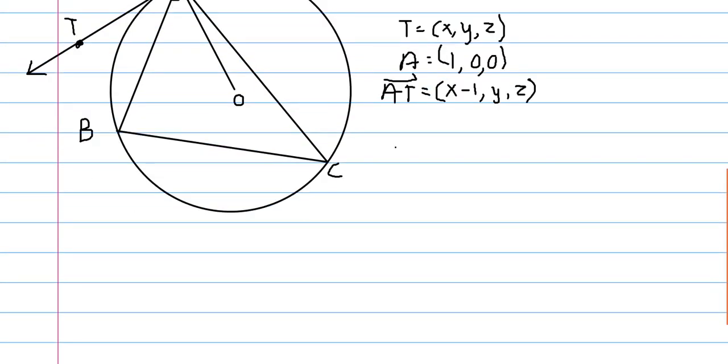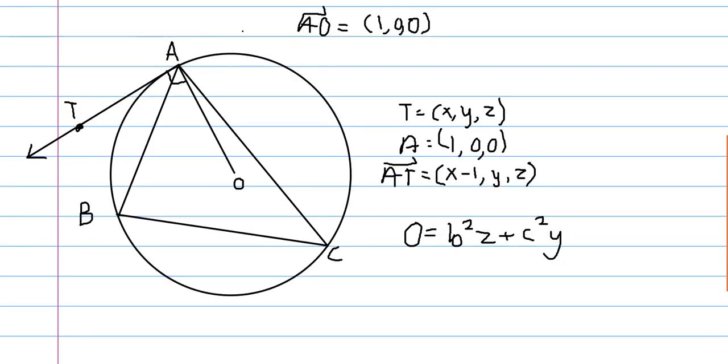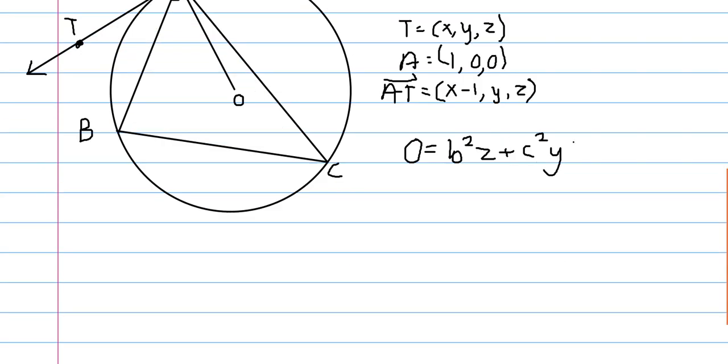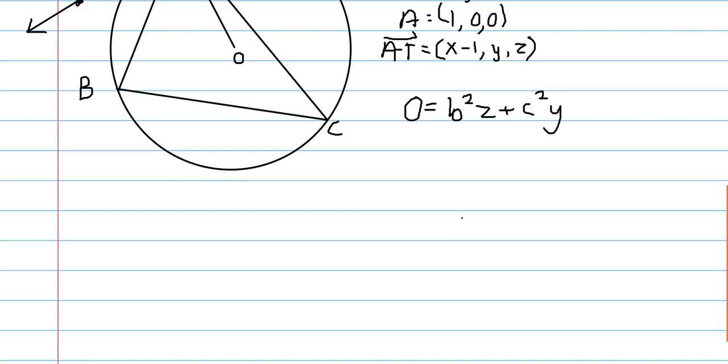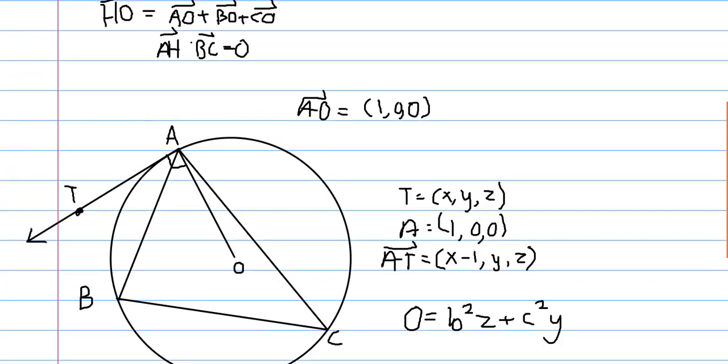And if you were to plug in these coordinates, then we get that zero is equal to b squared z plus c squared y. This is the parametrized tangent to the circumcircle at A, in terms of the y and z coordinates of the point.